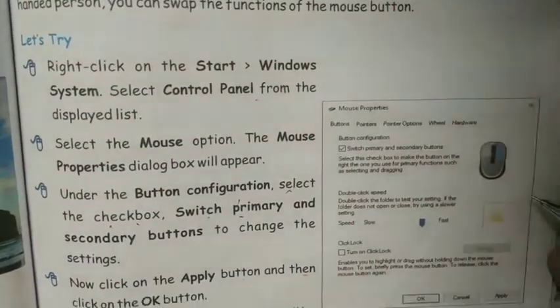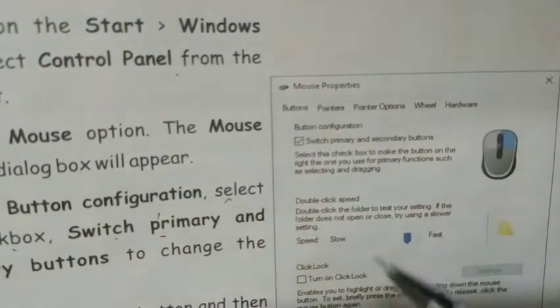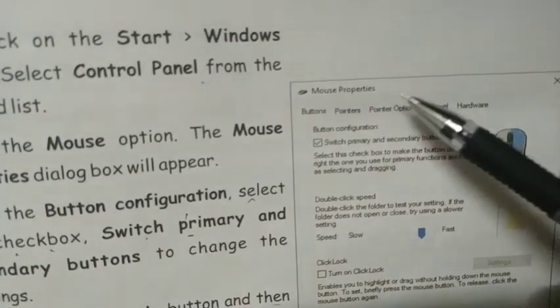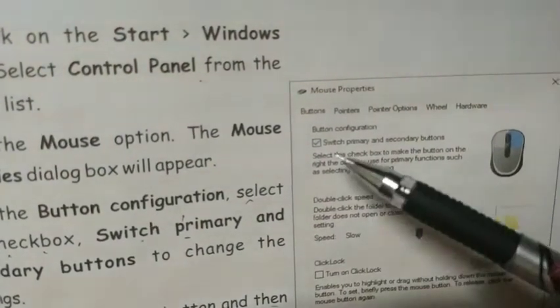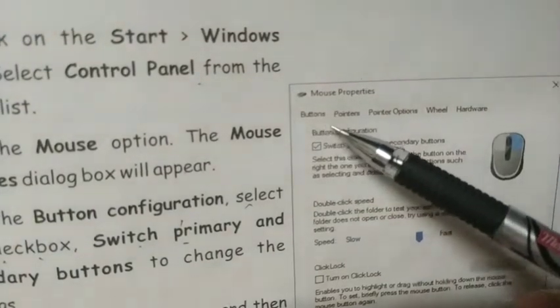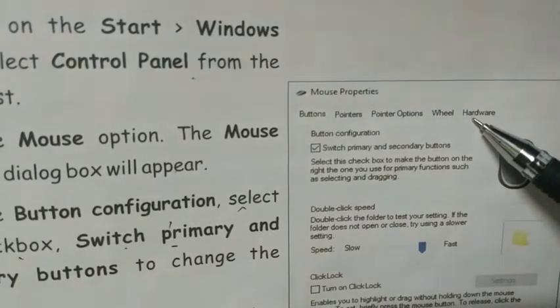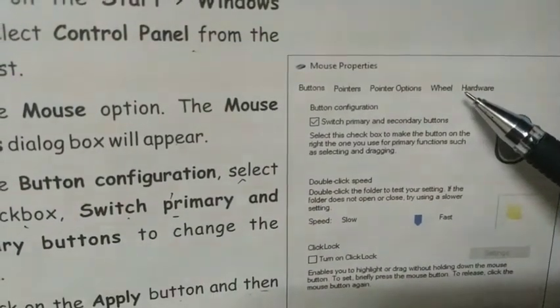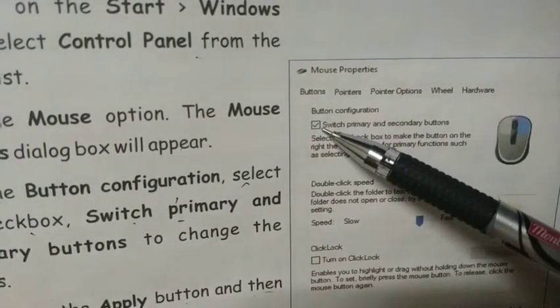Let me show you with the help of this example. You have Control Panel. The mouse properties window has buttons, pointers, pointer options, wheel and hardware. You have to go to mouse properties and go to button configuration. We have to click the checkbox.